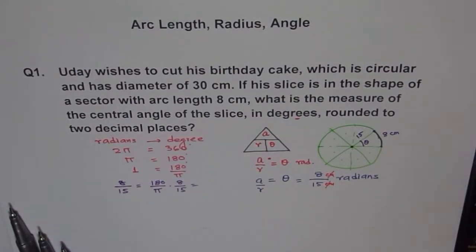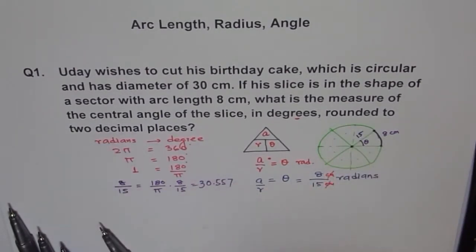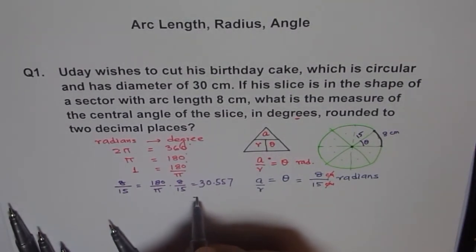And now we have 180 divided by pi, equals to 57.2957. And we will multiply this by 8, equals to something, and then we will divide it by 15. And we will get our answer, which is 30.5577. So, let me write this as 30.5577. We have to round to 2 decimal places. So, now we can round this answer to 2 decimal places, which will be 30.56.